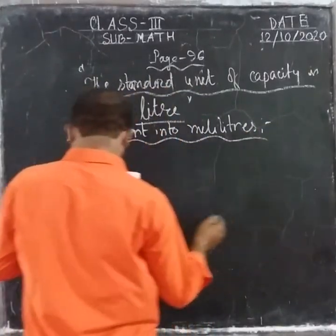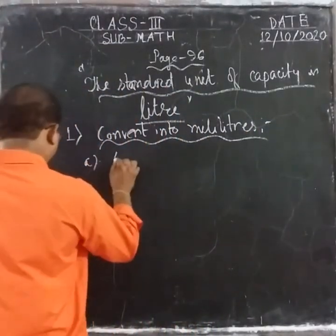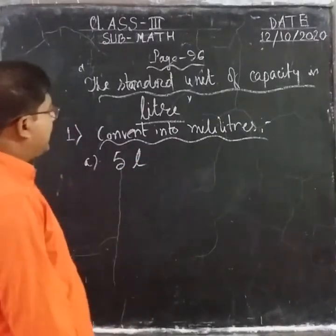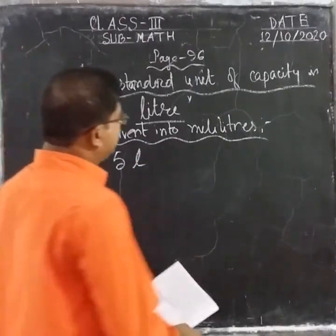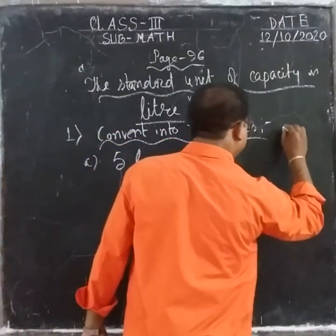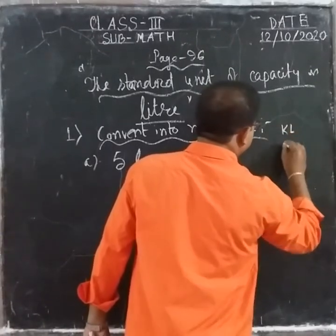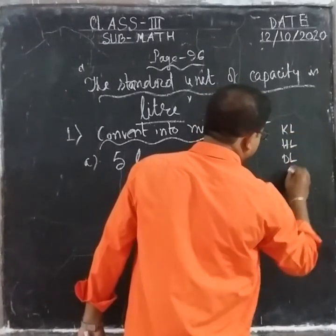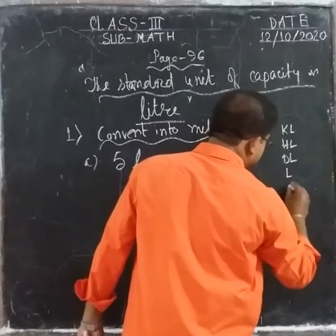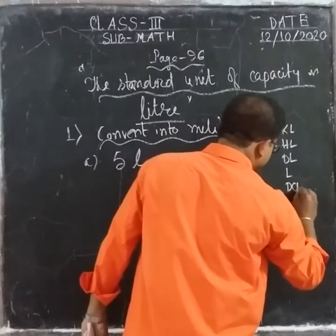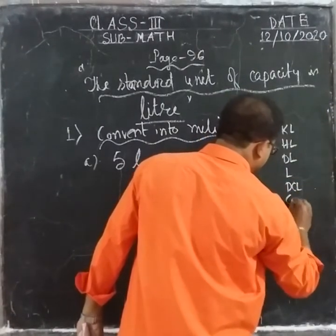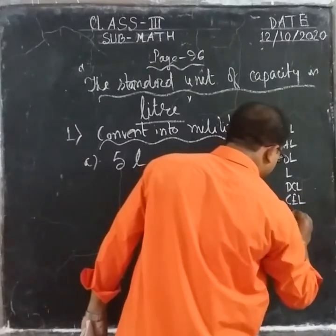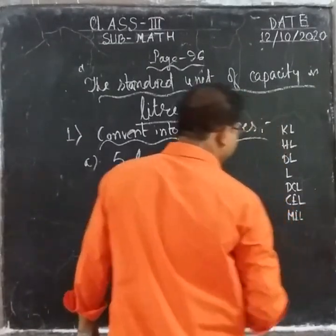The question is 5 liters. So how to convert? We use the liter table: kiloliter, hectoliter, decaliter, liter, deciliter, centiliter, and milliliter.